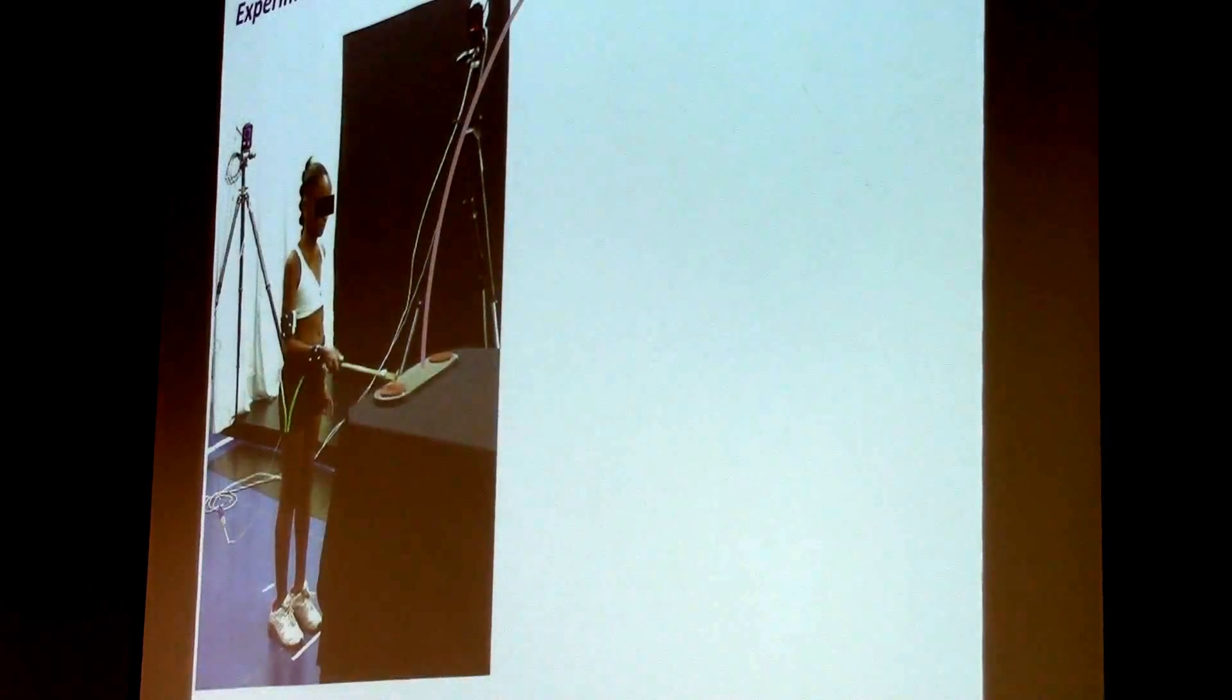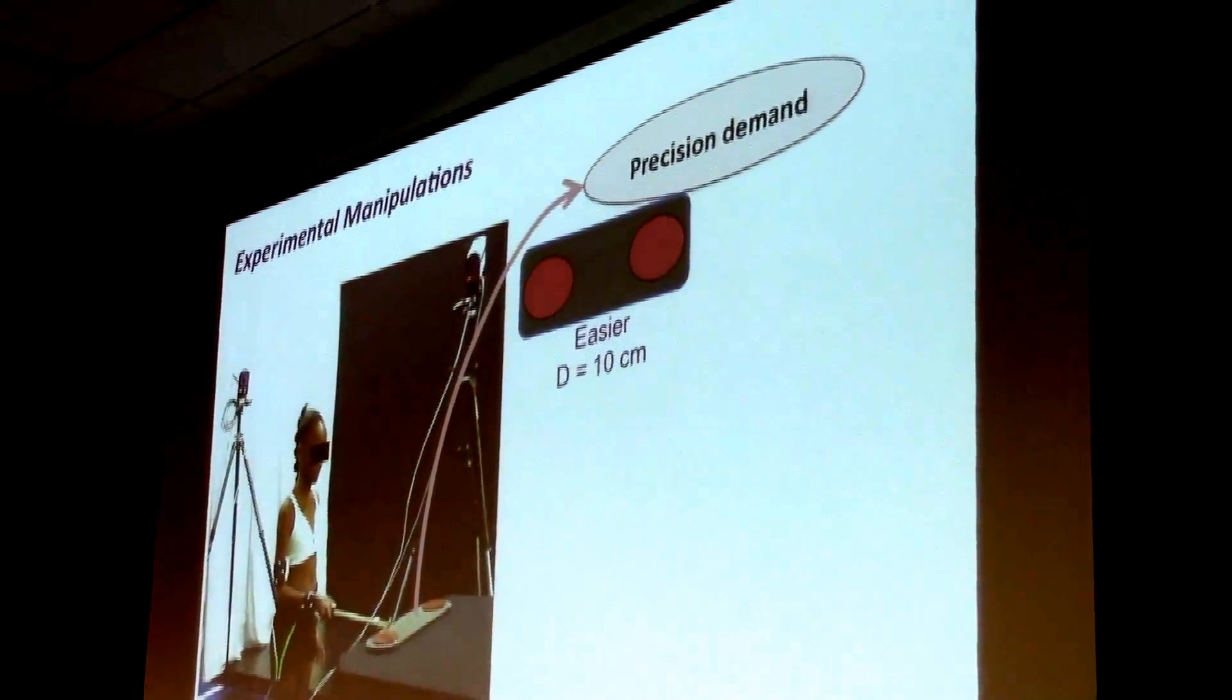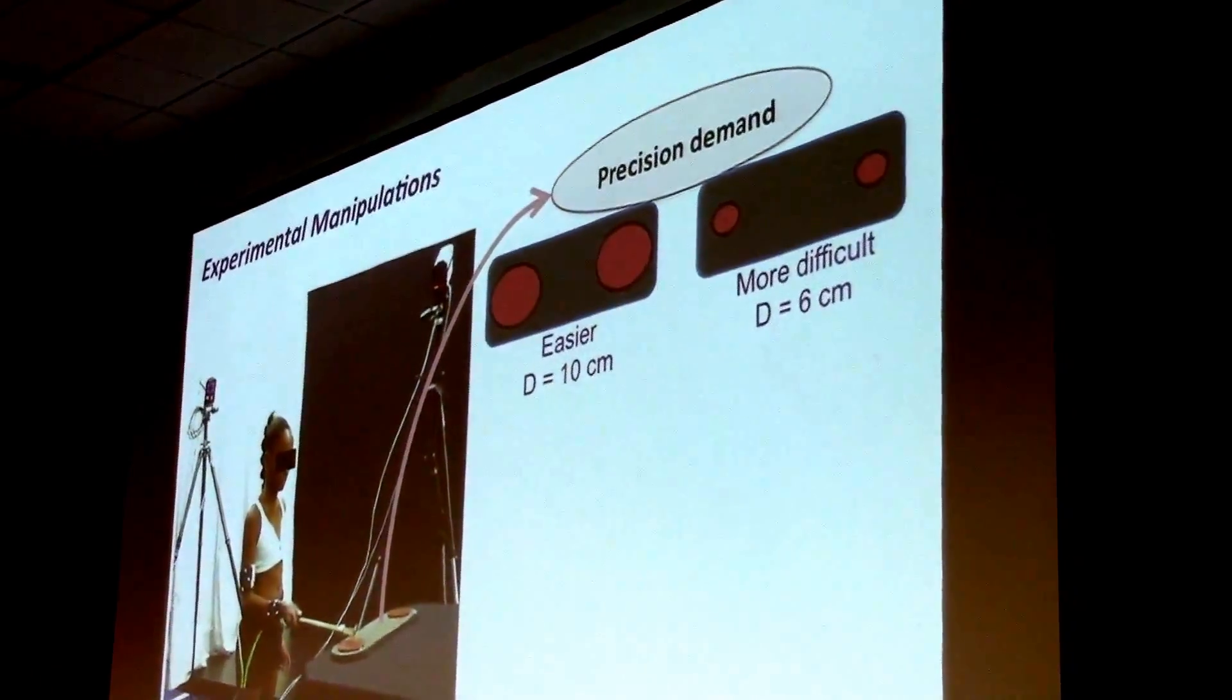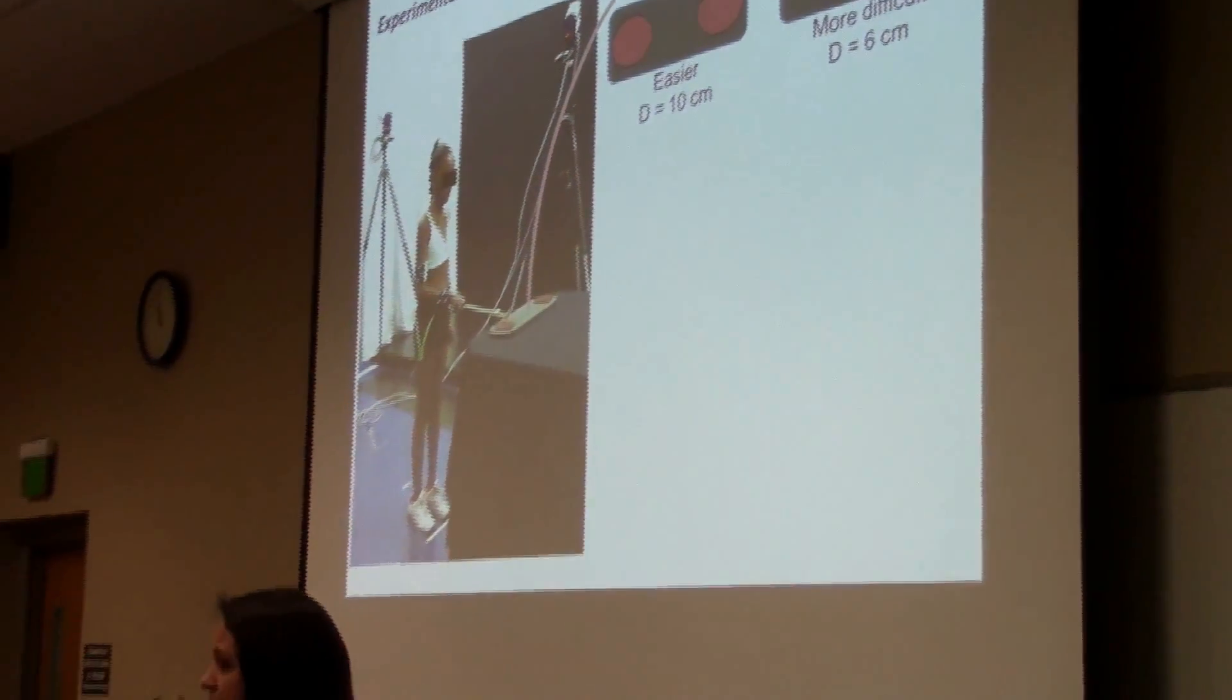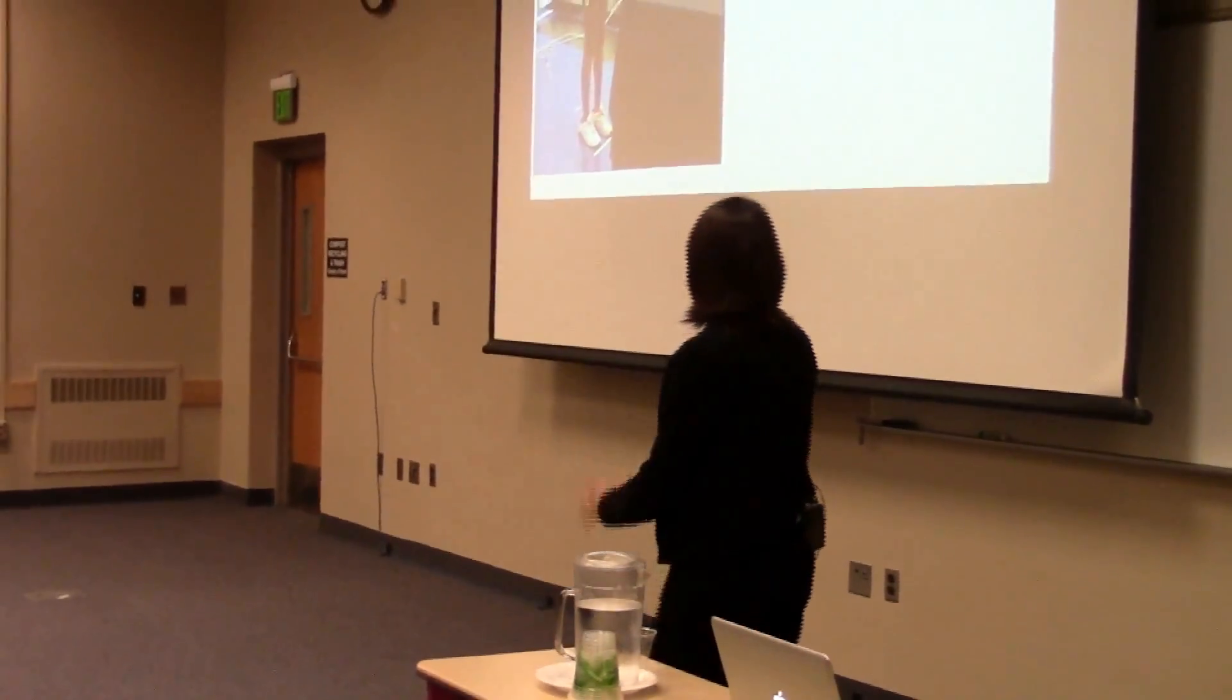So we manipulated precision demand. We had an easier condition where the diameter of the targets were about 10 centimeters, and a more difficult condition where the width of the target was 6 centimeters, basically the best an individual with CP could do in our task.